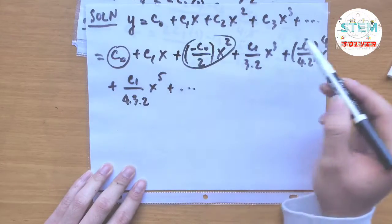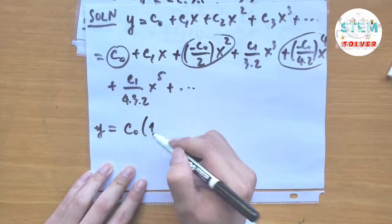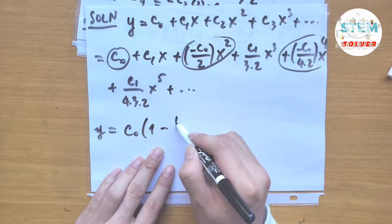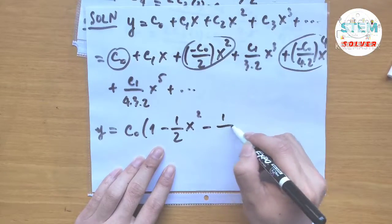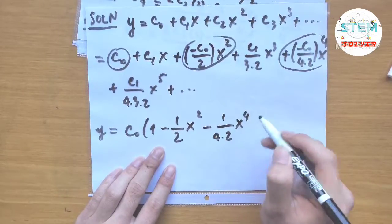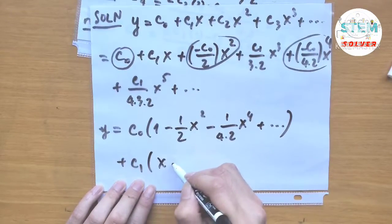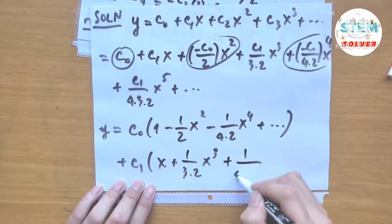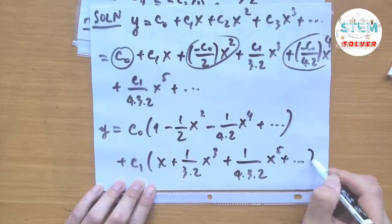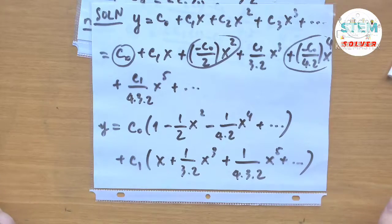Grouping by c_0 and c_1: y equals c_0 times [1 minus (1/2)x² minus (1/4·2)x⁴ plus dot dot dot] plus c_1 times [x plus (1/3·2)x³ plus (1/4·3·2)x⁵ plus dot dot dot]. This is our final solution for the differential equation.